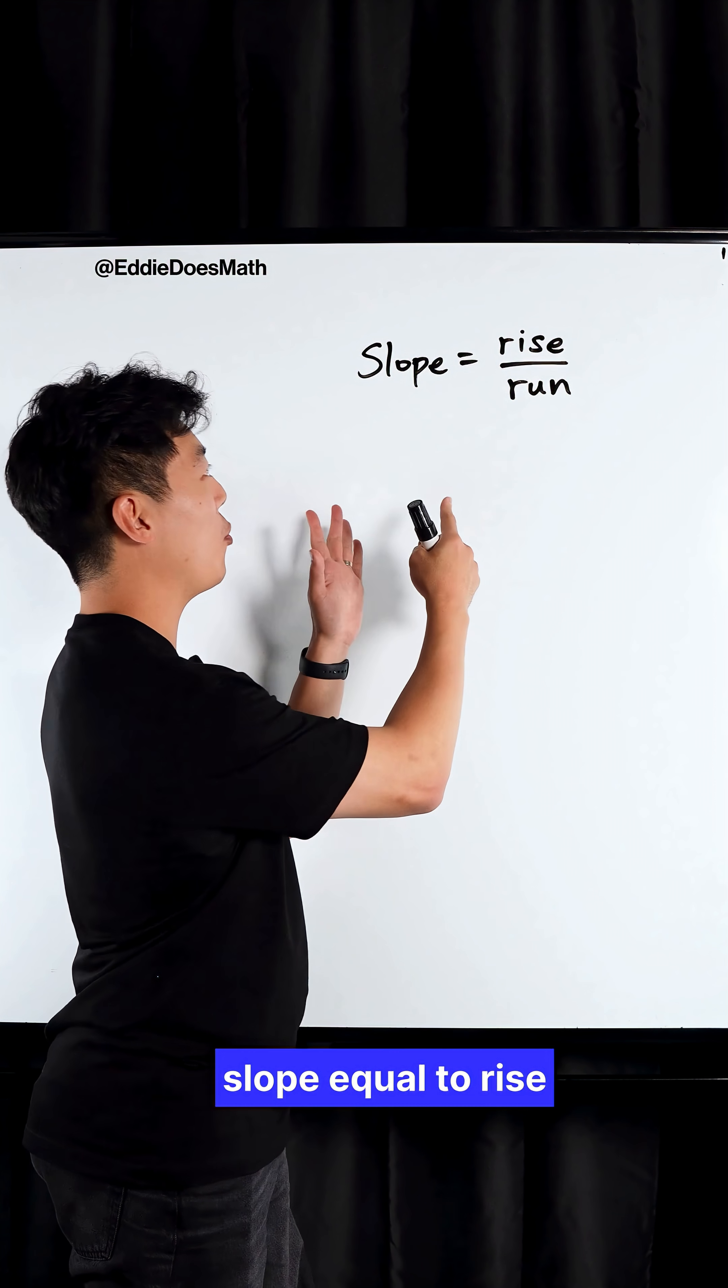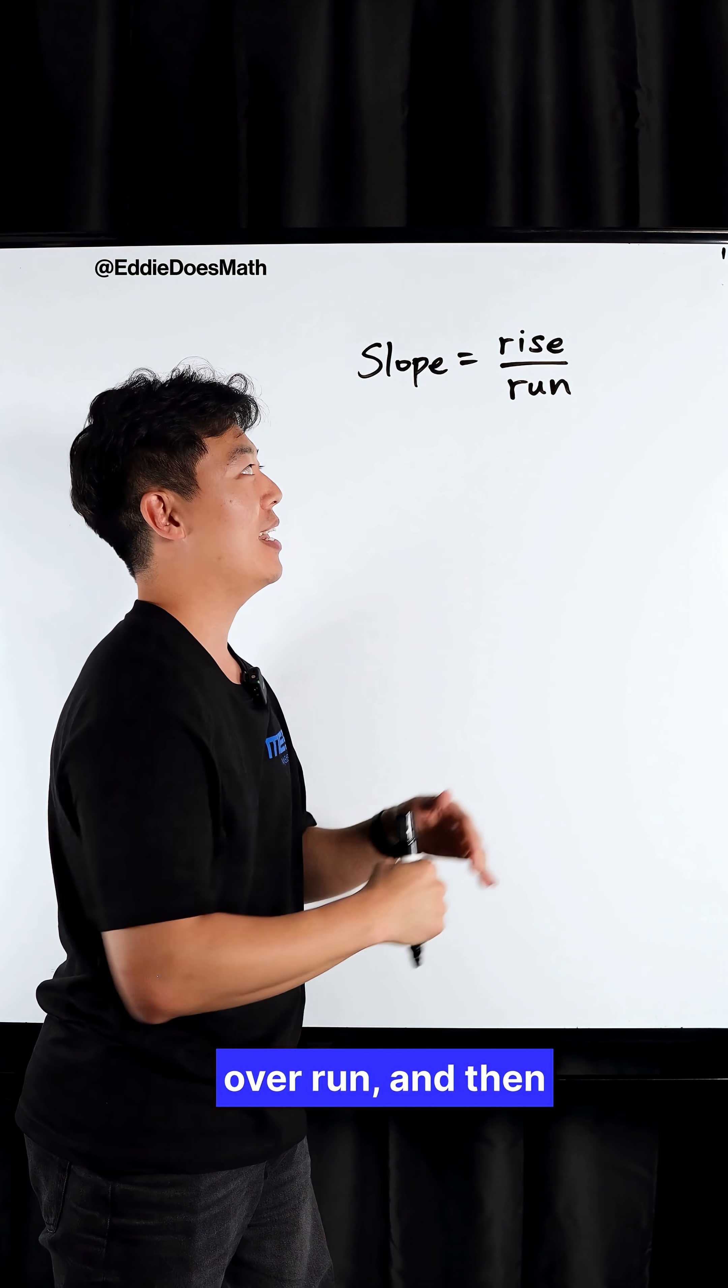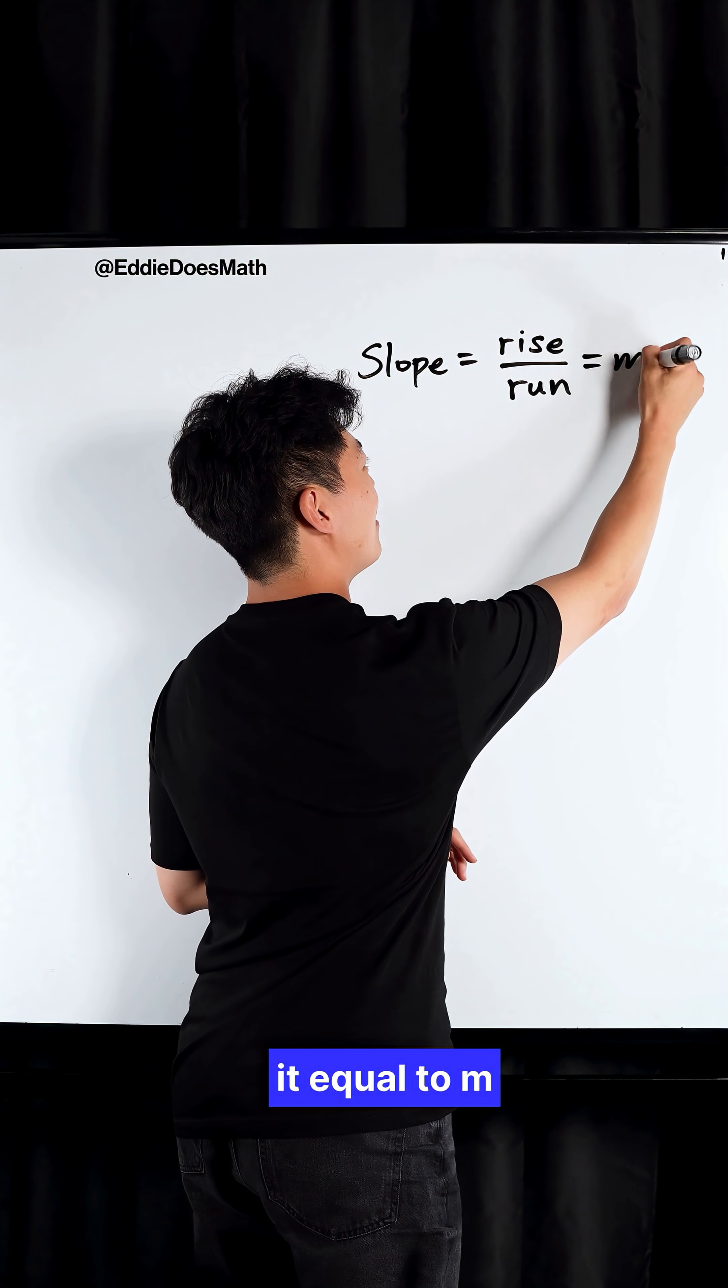Which slope definitions have you seen? When you enter middle school, you'll see slope equal to rise over run, and then you'll eventually see it equal to M.